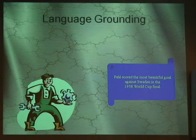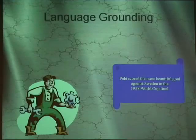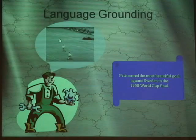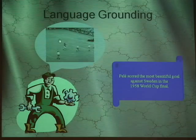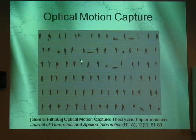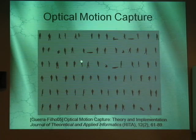Here is an example on language grounding. What does it mean to read that 'Pelé scored the most beautiful goal against Sweden in the 1958 World Cup final'? For the next ten minutes or so, I'll show you how, from data, you can get to what we call HAL. HAL stands for Human Activity Language. We have various ways of capturing this data — here are some examples done optically to develop these models.